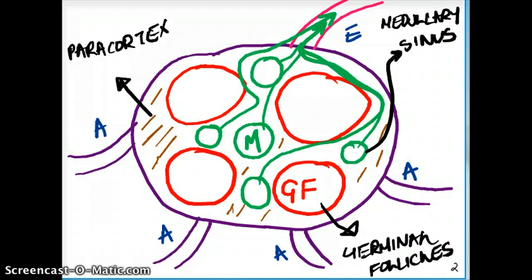Now, you can also divide the germinal follicles into even more structures. For example, there is the primary follicles and then the secondary follicles. The primary follicles are more dense. The secondary follicles are going to be pale. And the secondary follicles are the ones which are more active.